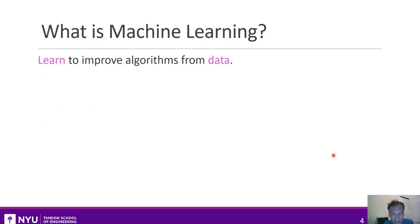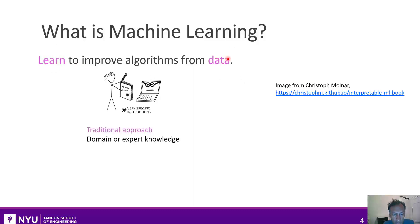Machine learning fundamentally is about learning to improve algorithms from data. There are two key words here: learning and data. Let's contrast that with traditional approaches. In a traditional approach, we use an expert, and what she wants to do to create a computer program to do some task is to use her expertise and encode that into very specific instructions for the computer.